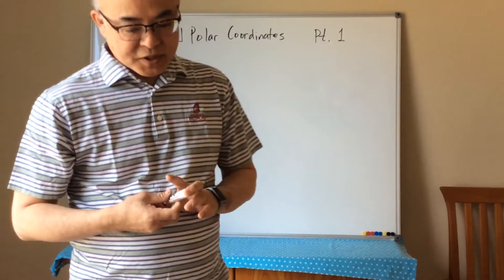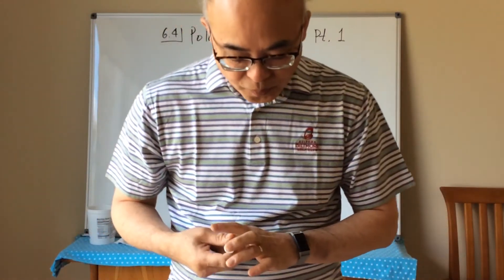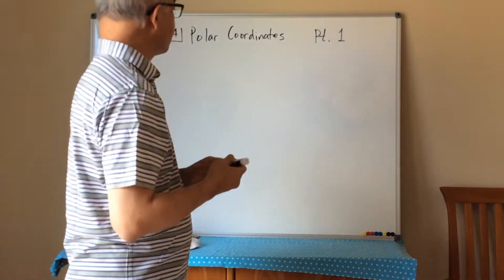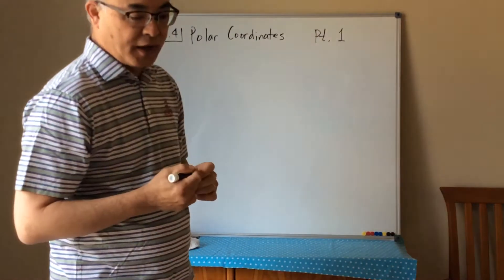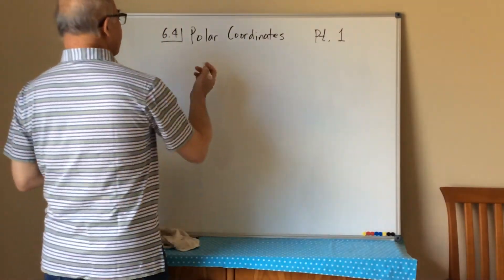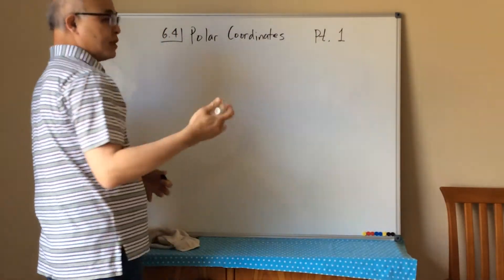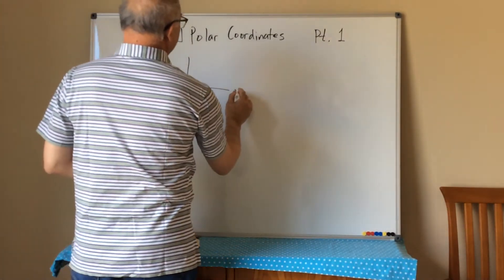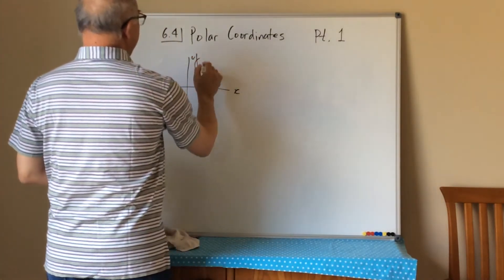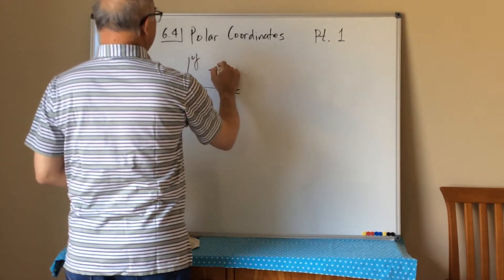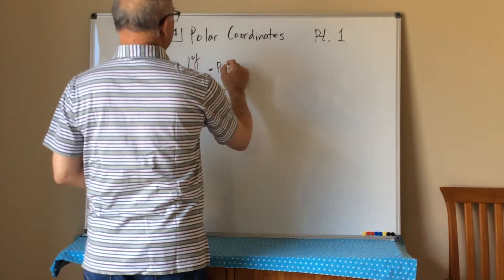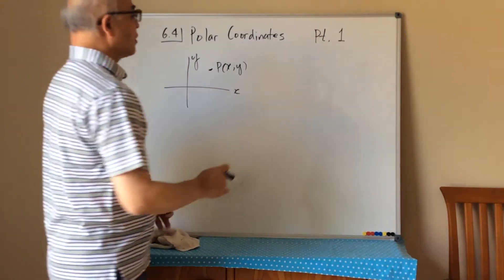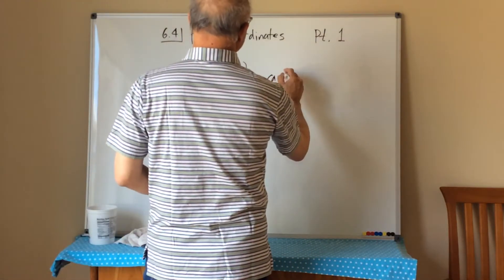Today we're going to talk about 6.4 polar coordinates. This is a brand new coordinate system for you. So far you've just learned the xy Cartesian coordinates. If you had an x and a y axis, you have a point p, you would call that (x, y). This is your normal Cartesian coordinate system.